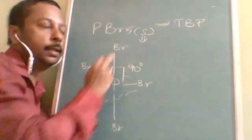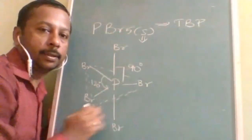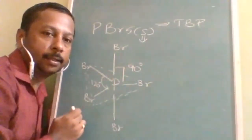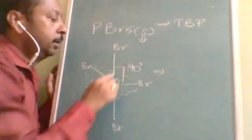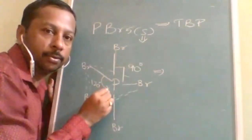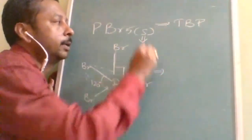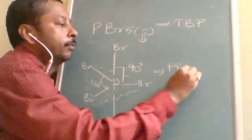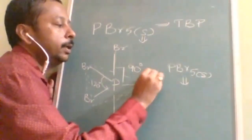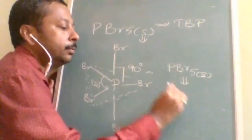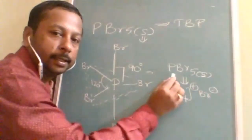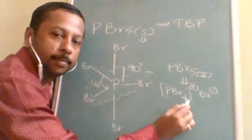This problem increases when it is converted into solid state, because more molecules come together and the instability increases. Due to unequal bond angles and unequal bond lengths — this bond length is more than the other — PBr₅ is unstable. So in solid state, it exists as PBr₄⁺ and Br⁻.